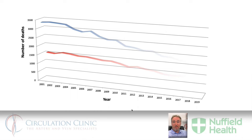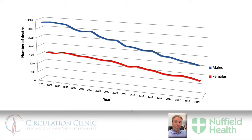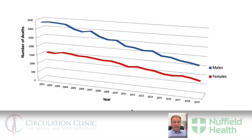Perhaps the reason abdominal aortic aneurysms don't feature high in public consciousness is precisely because of the demographic affected. Or perhaps it's because deaths from abdominal aortic aneurysms are gradually decreasing over time — there's been a marked improvement in survival over the last 20 years. The reasons are probably multifactorial: an actual reduction in prevalence, improvements in cardiovascular health, better pharmacological mitigation of risk factors, a reduction in cigarette smoking, and interestingly some evidence that diabetes is protective in some way against abdominal aortic aneurysm development.